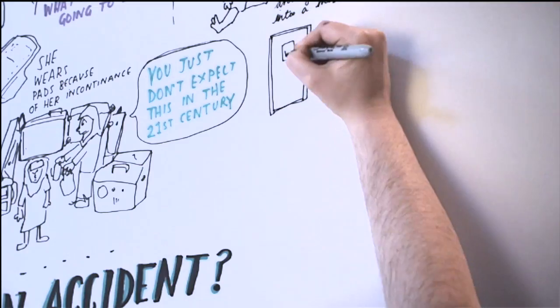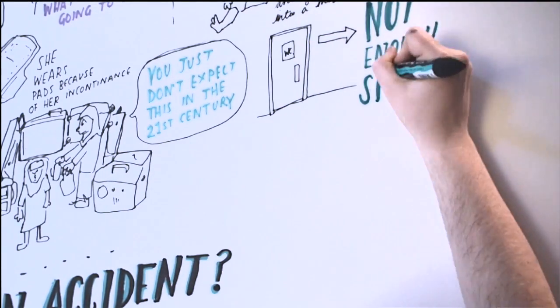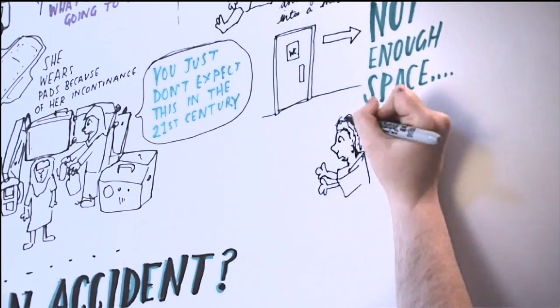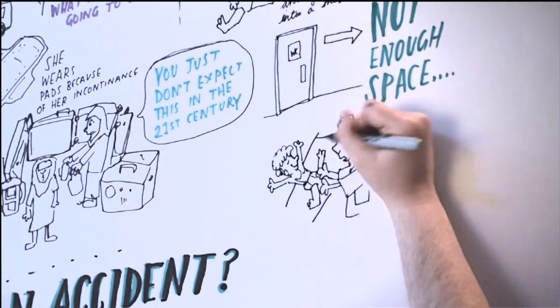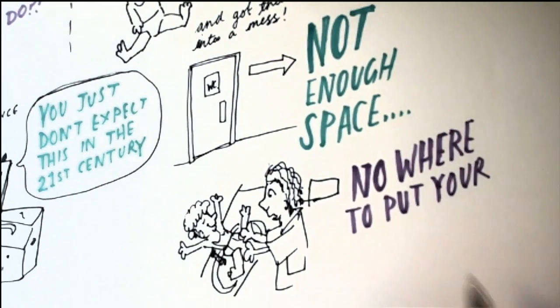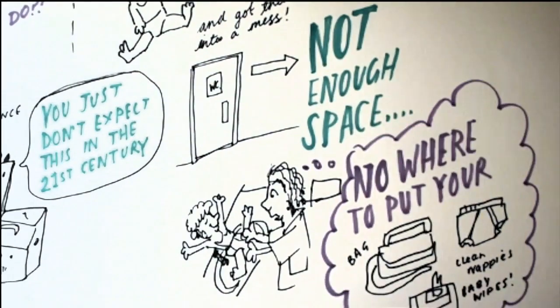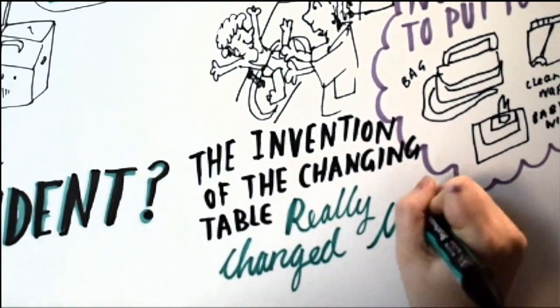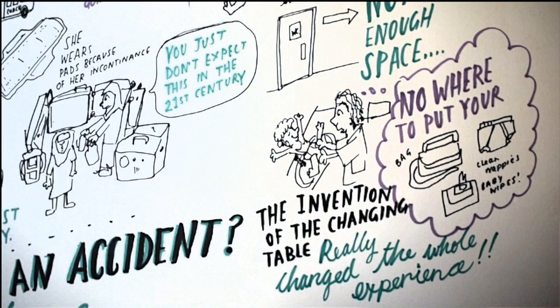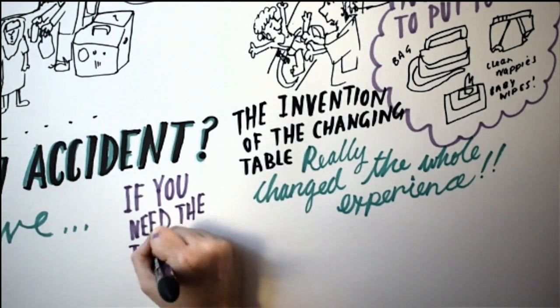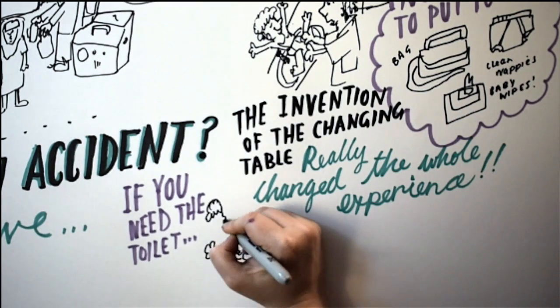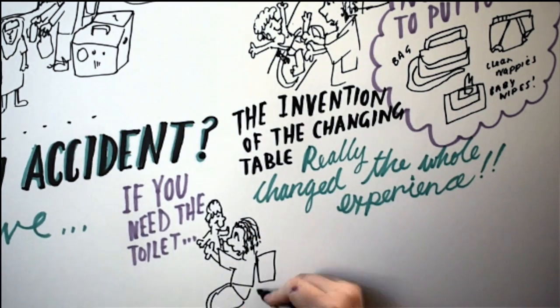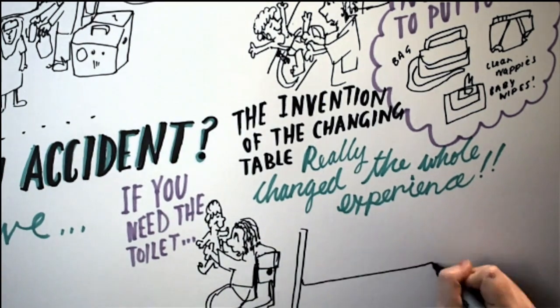They might have done a poo and it's gone on their body and then you need to wipe it off, but then they're laying on the floor and you just end up in an absolute mess. There's not enough space, there's nowhere to put your bag, the clean nappy, the wipes. The invention of a change table must really have changed people's experiences in toilets with young children. If you're with a young baby and you need the toilet yourself, you need to have somewhere to put them. This paper change table unit is like gold dust.